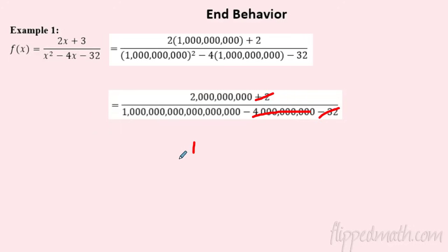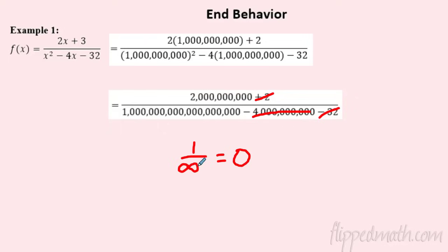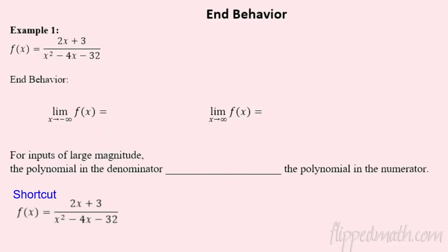I've got a massive number on the bottom caused by the squaring, versus the top where two billion is nothing compared to a billion billions. So what's going to happen is I've got a smaller number on top and something infinitely large on the bottom. If you take one dollar and divide it among a billion people, everybody gets about zero dollars. When you divide by a super huge number it goes to nothing — that's the key idea here.